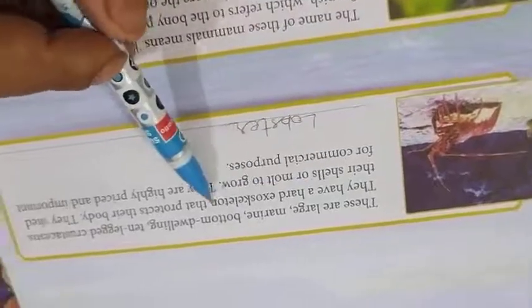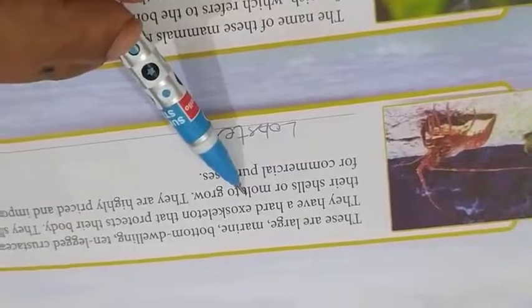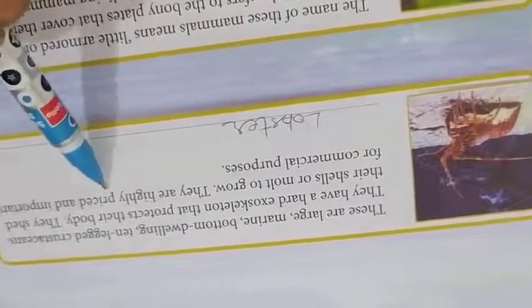These are large marine bottom-dwelling 10-legged crustaceans. They have a hard exoskeleton that protects their body. They shed their shells or molt to grow. They are highly prized and important for commercial purposes. This is lobster.